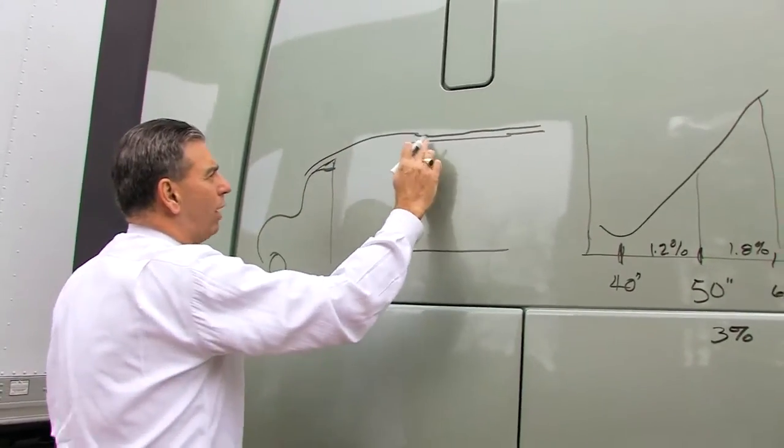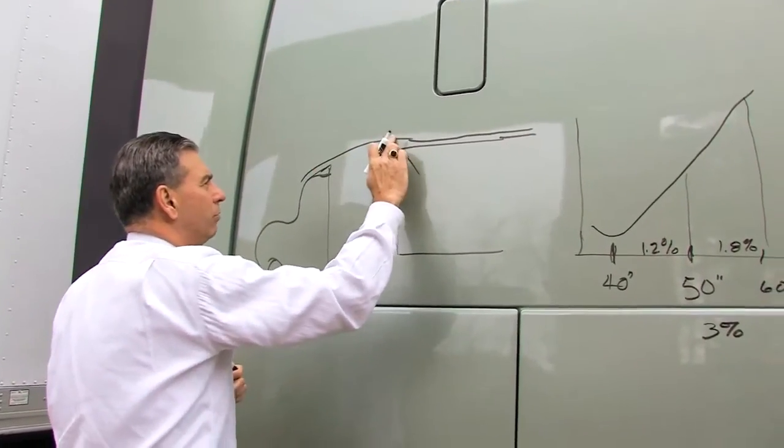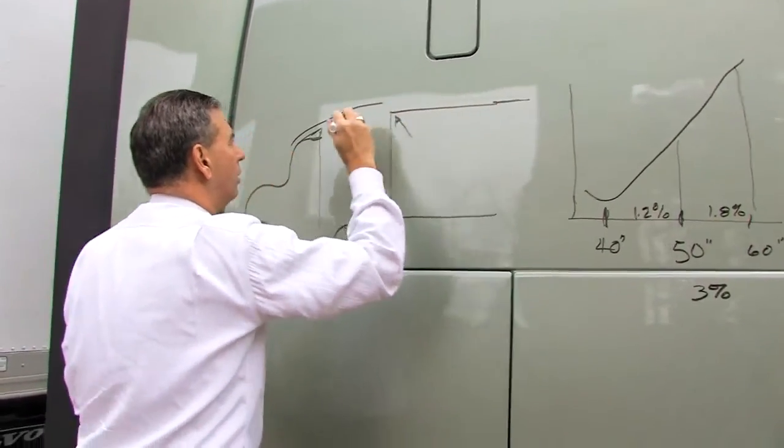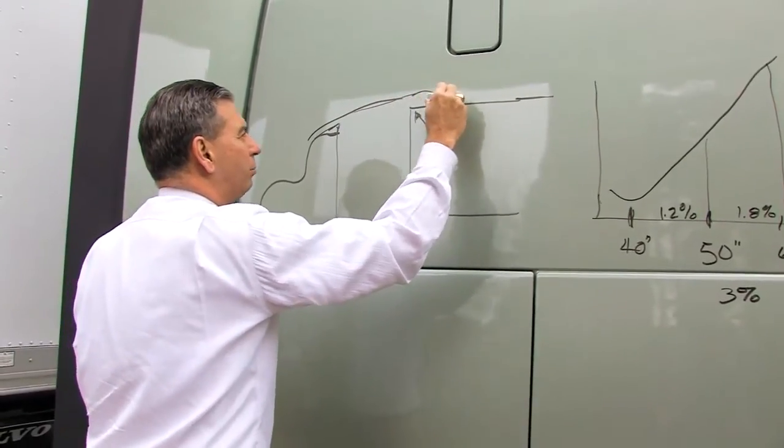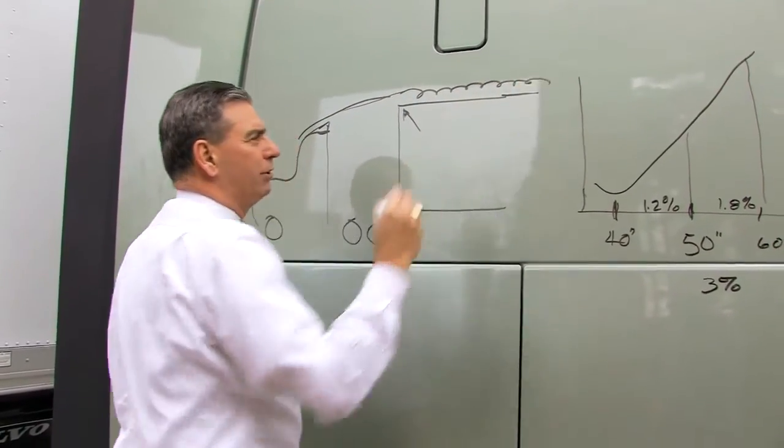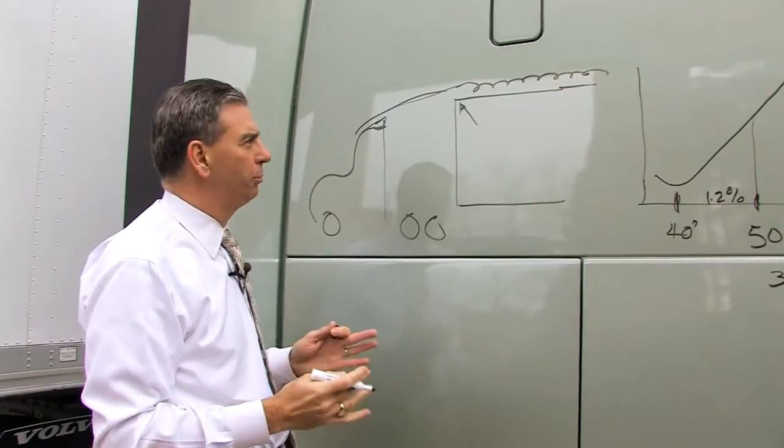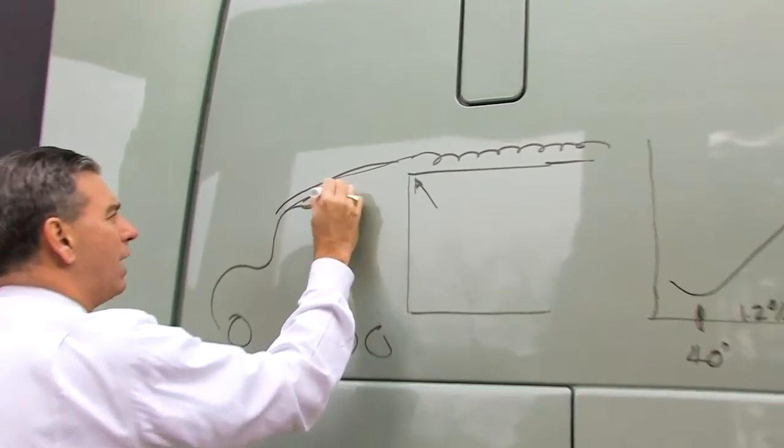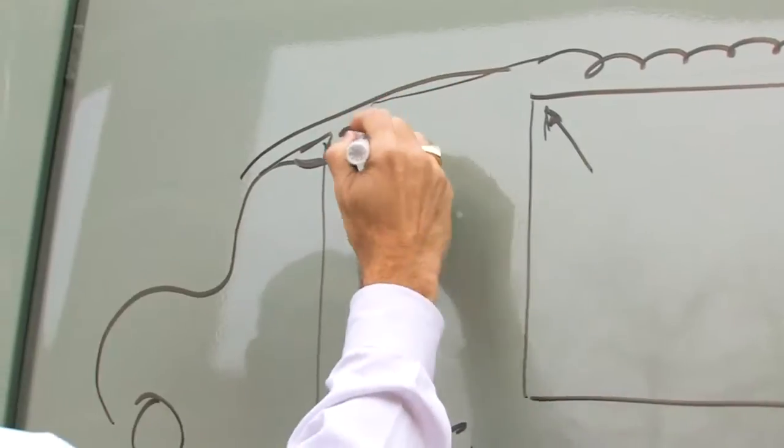If this gap gets too much wider, what will happen is the air will continue up and it will begin to tumble along the top of the trailer causing more turbulence. So what you'll see are designs that start to bring that down.